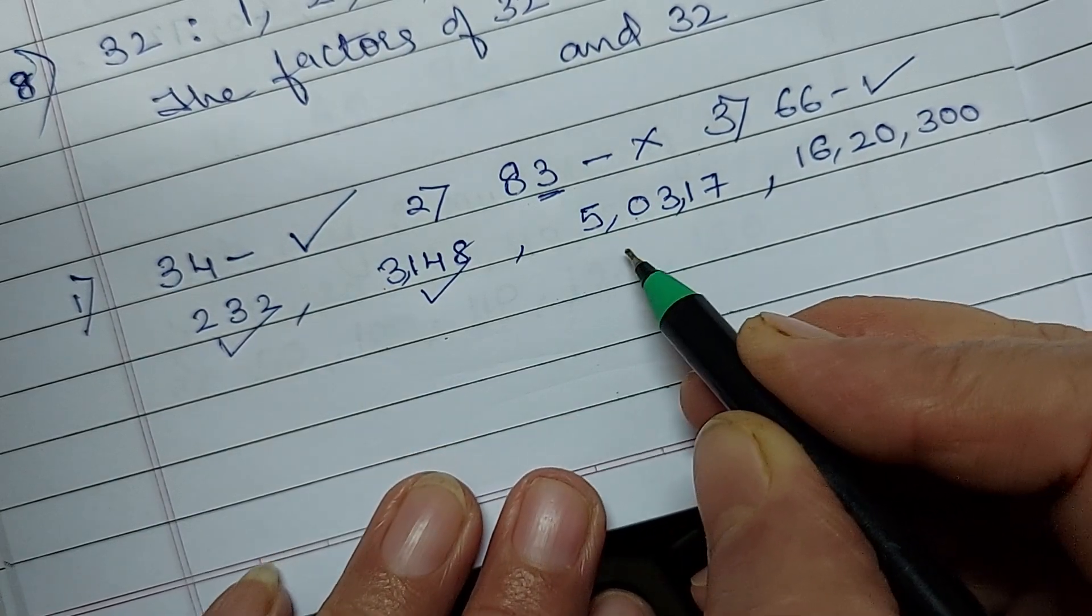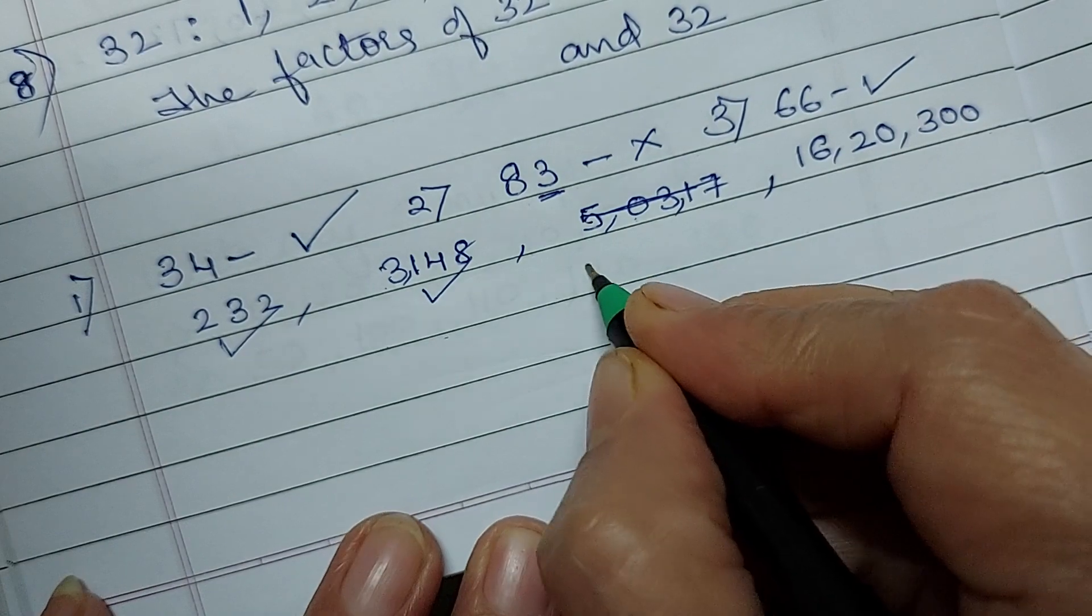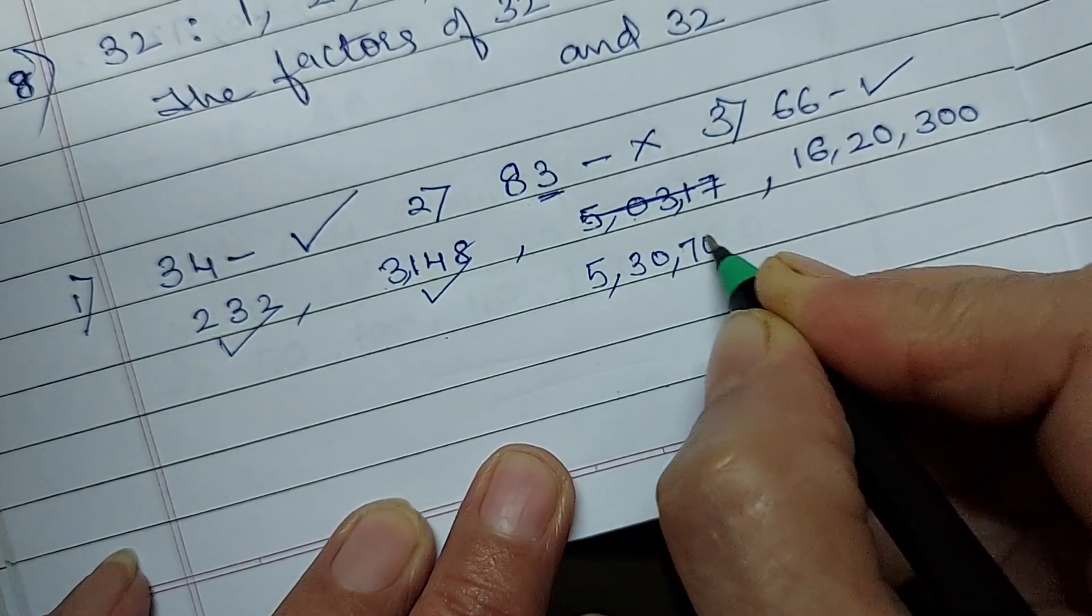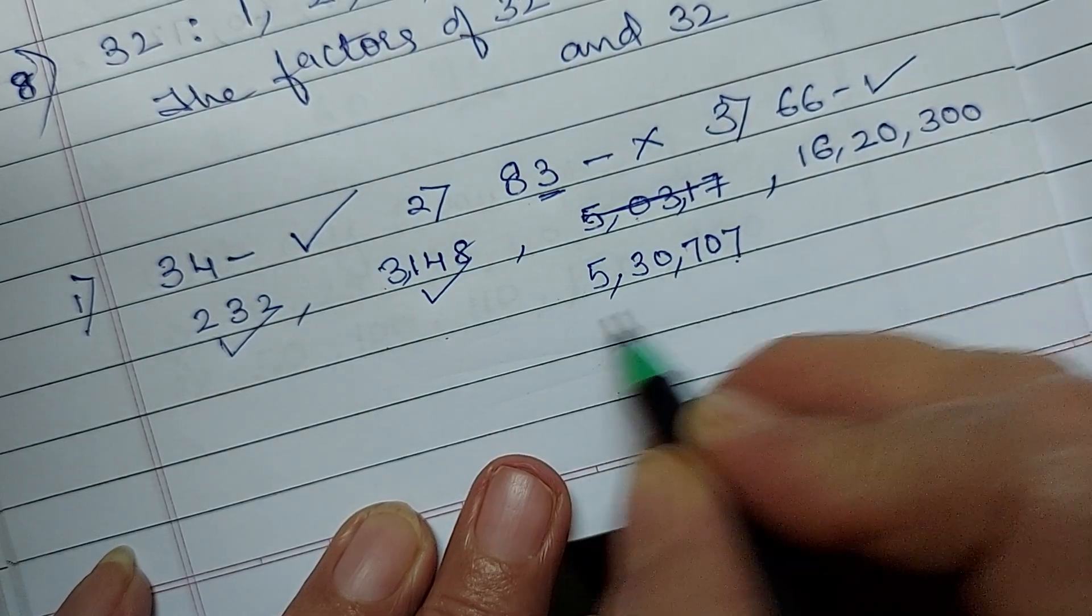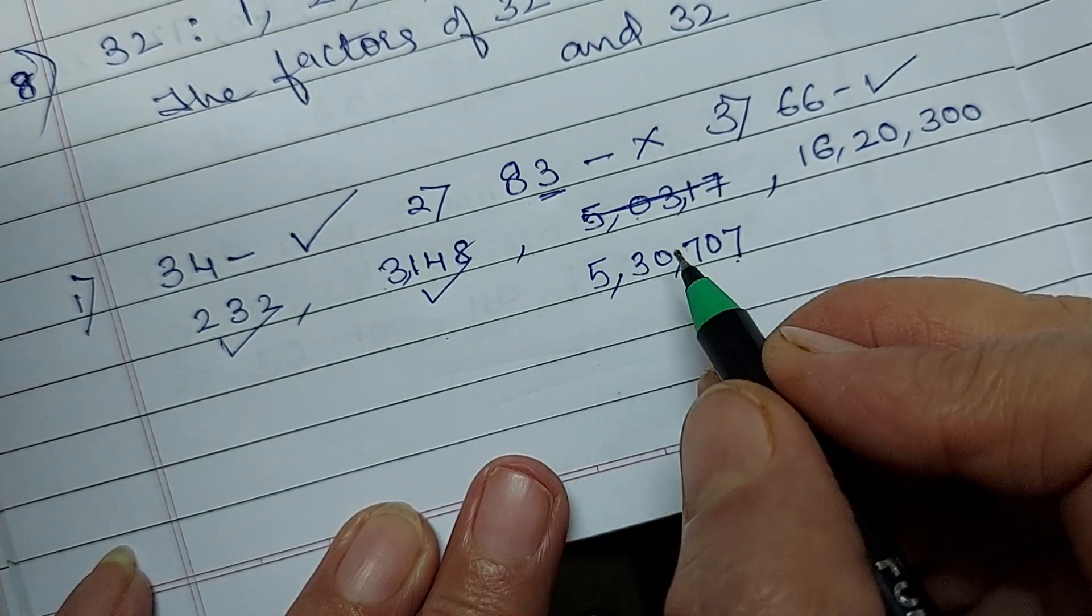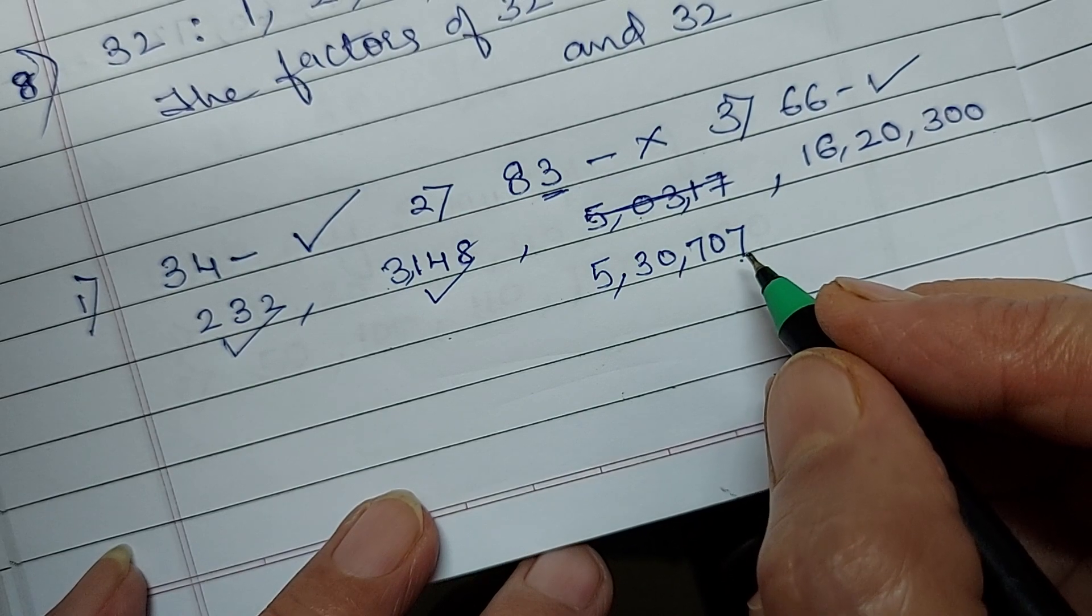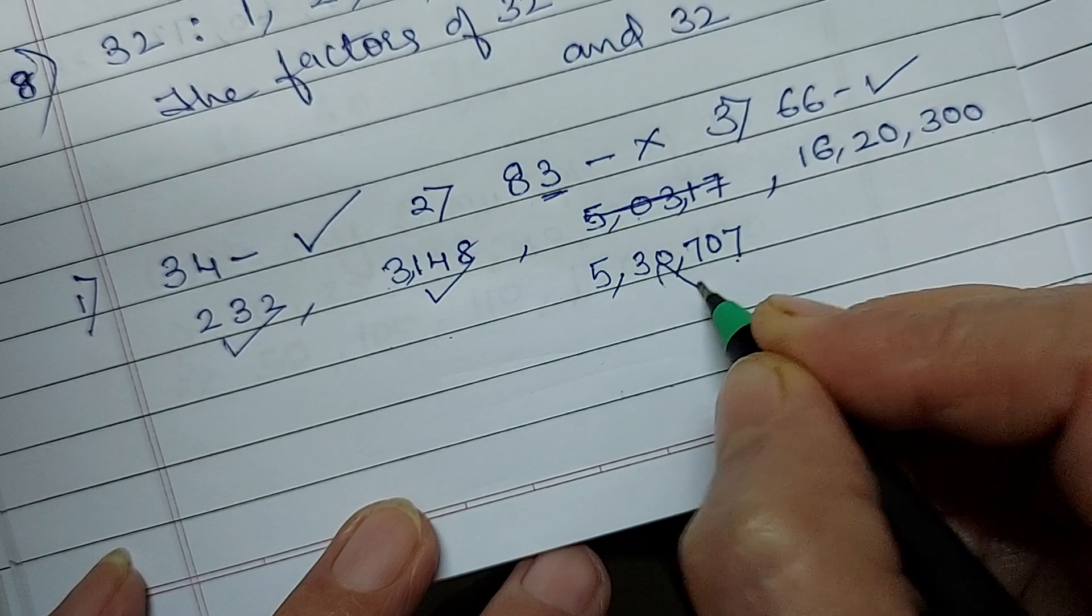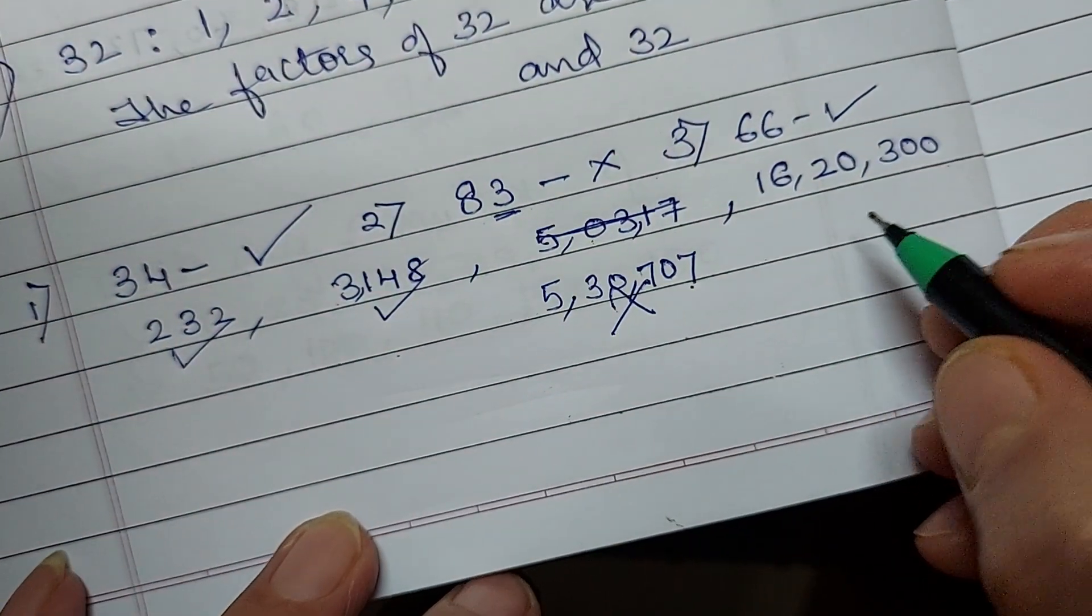Coming to the next number. This is 5,033. Sorry. This number is wrong. I will write again. This is 5,30,707. Now this last number is 7. You need not worry about the number. It is in lakhs or it is in crores. You need not worry about that. You just worry about the last digit. If it is odd, it is not divisible.